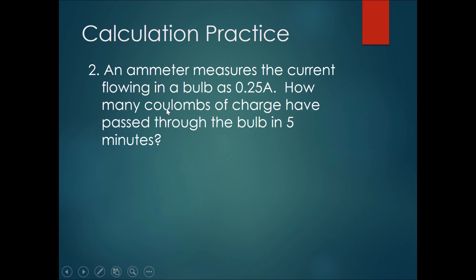Let's try again. An ammeter measures the current flowing in a bulb at 0.25 amperes. How many coulombs of charge have passed through the bulb in five minutes? Please pause the video here and solve the problem.